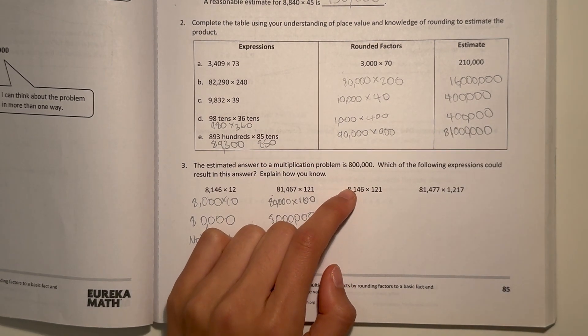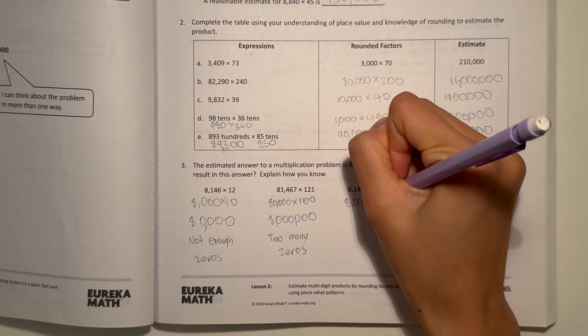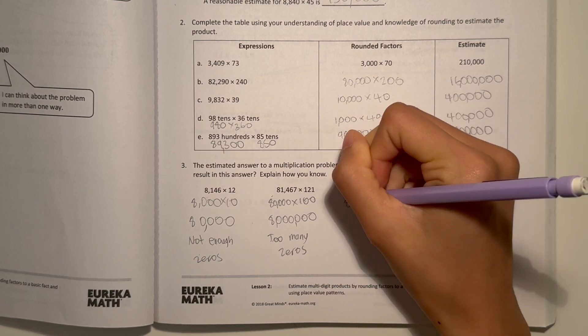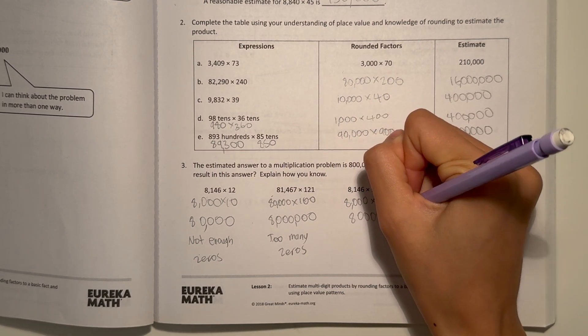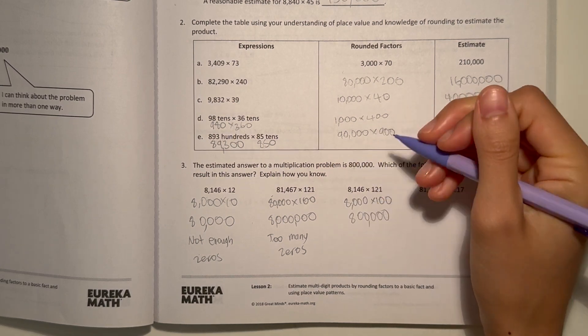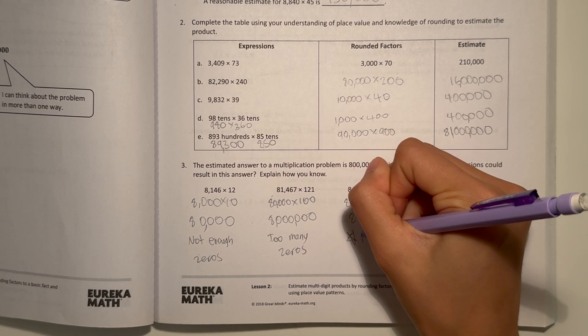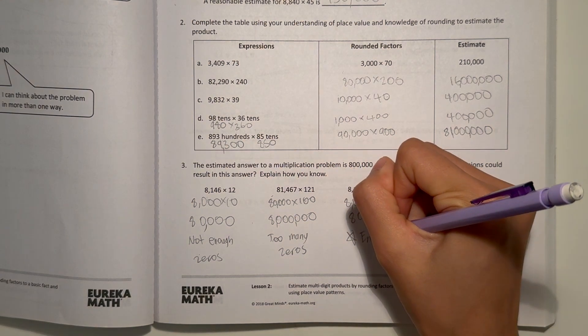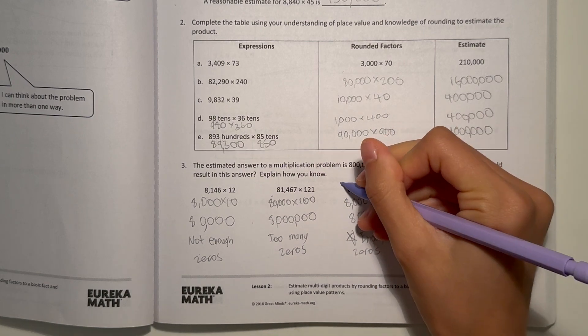And now this one. This number rounds to 8,000 × 100. 8 × 1 is 8, and there's 5 zeros. So this number is the answer. Enough zeros. So this one would work.